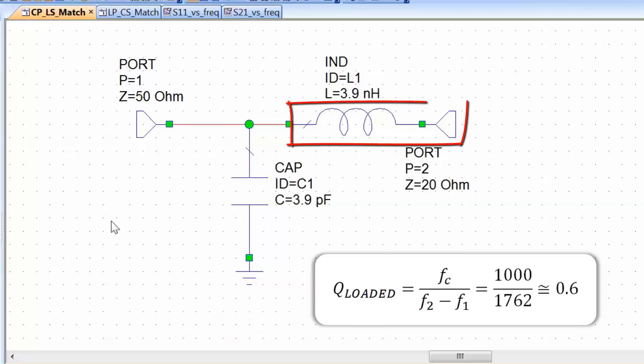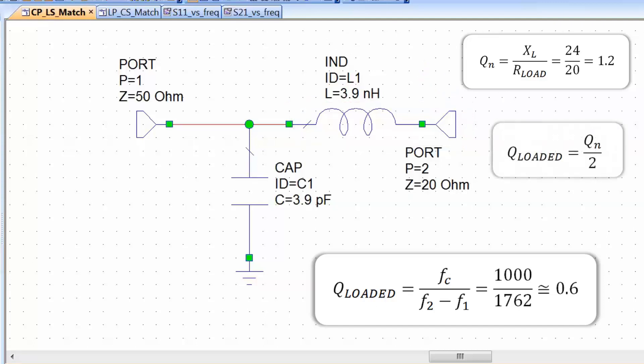Now if I go back to the matching network schematic which represents this low pass filter, having measured the bandwidth of this network I can actually work out its Q, which is the center frequency of 1 GHz divided by 1762 MHz. This turns out to be approximately 0.6. Now I can also work out the Q of this network algebraically and we will follow the Gonzalez approach for this one. We can just look at the Q of this LR combination which is represented by this inductor and this port. Remember that this port is a 20 ohm resistor. The loaded Q of the circuit then can be calculated by halving this value. And so we get 1.2 divided by 2, around 0.6, which is exactly what we got from our frequency response on the graph.